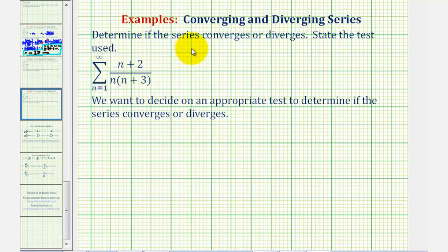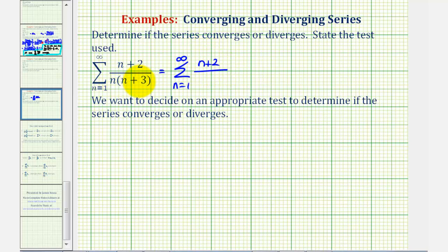We want to determine if the given infinite series converges or diverges. Let's take a look at a_sub_n to help us determine the best test to apply. It might be helpful to write the series as the sum from n equals one to infinity of the quantity n plus two divided by n squared plus three n. Notice if we ignore the plus two and the plus three n, we'd have the sum of n divided by n squared, which simplifies to one divided by n. So the given series resembles the sum of one divided by n, which diverges by the p-series test, where p equals one.